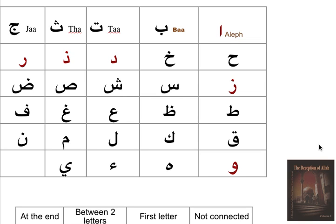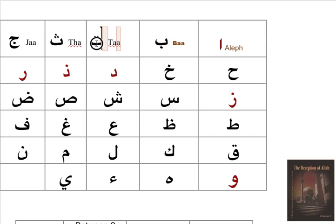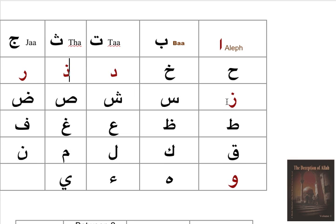Hello everyone, peace of Christ to all. Today we will continue our Arabic class and take more letters. We will try to finish them as fast as we can — remember, language is based in letters. We already took alif, ba, ta, tha, ja, ha, da. Now we will take the, ra, and za.